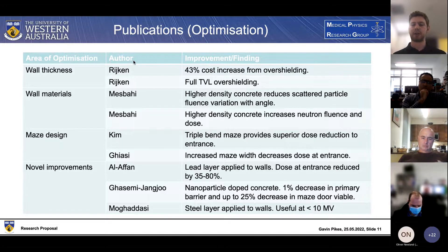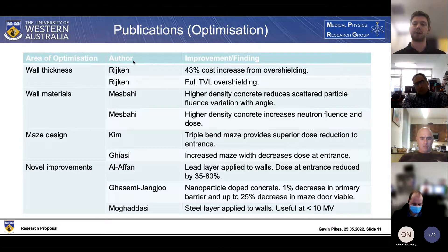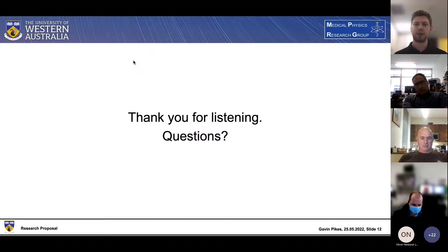Steel layering has also been applied with similar results. Another interesting improvement has been nanoparticle-doped concrete, which resulted in a one percent decrease in primary barrier width as well as up to a 25 percent decrease in maze door width while still maintaining the same shielding capabilities. That's all I really have to say - thank you for listening, are there any questions?